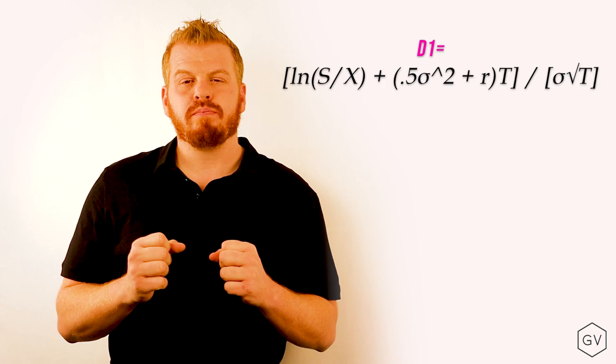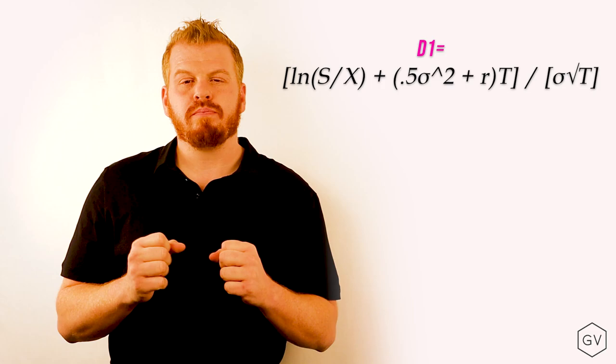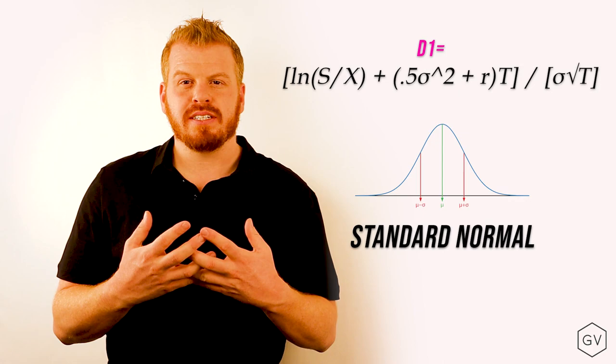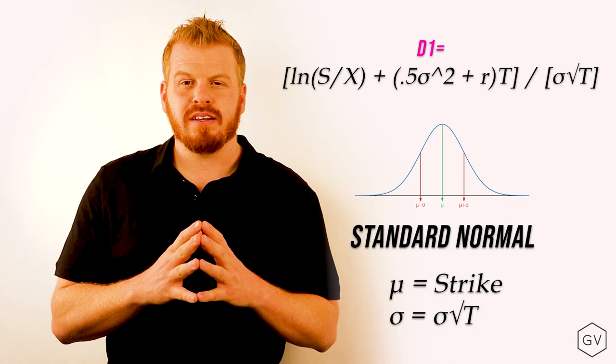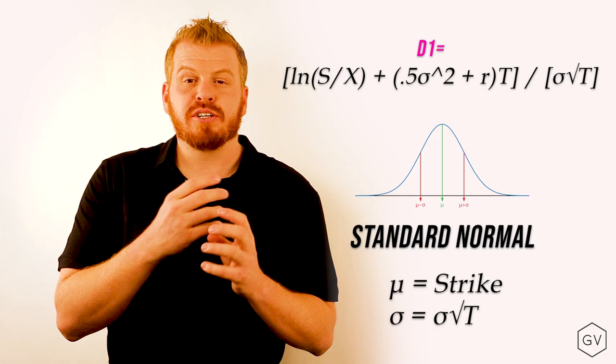Something to keep in mind as we break apart D1 is that we're going to use the standard normal distribution in order to calculate the final probabilities. Instead of setting the mean at zero, we're going to set the strike price as the mean. And we're going to calculate how good in the money or how far out of the money, in terms of standard deviations, everything is.